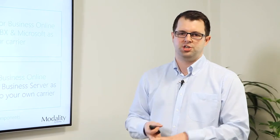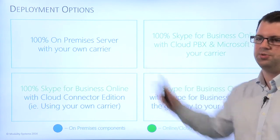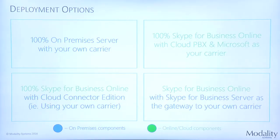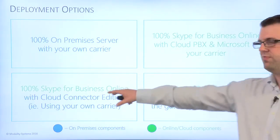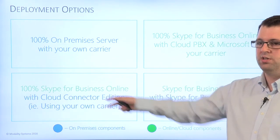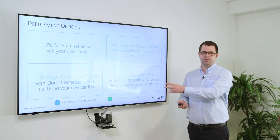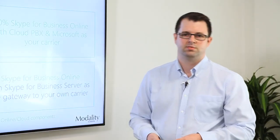To summarize, you've got four major deployment options depending on your business requirements. You can go 100% on-premise server, which continues to be supported. You can go 100% cloud, particularly in the US or UK, and take advantage of Microsoft PSTN calling. Or you can mix the two: go Skype for Business Online with Cloud Connector Edition and bring your own PSTN, or go hybrid with server and have all the server capabilities alongside cloud capabilities — mixing and matching where users go based on business requirements. Thanks for listening.